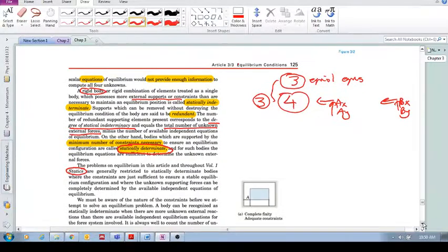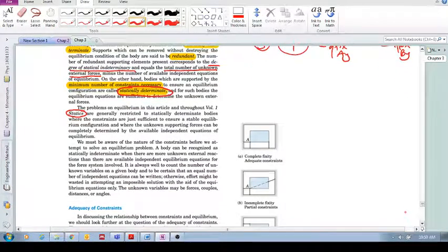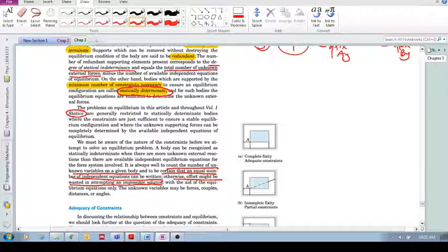When you're looking at a problem, it is always good to count the number of unknown variables on a given body—the unknown forces, the unknown constraints—and be certain that an equal number of independent equations can be written. Otherwise, you might be wasting your time with an impossible solution because you have more unknowns than equations.